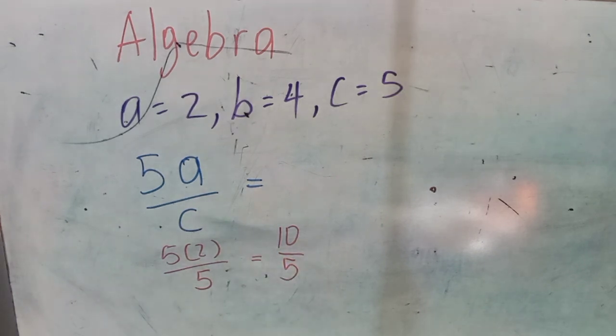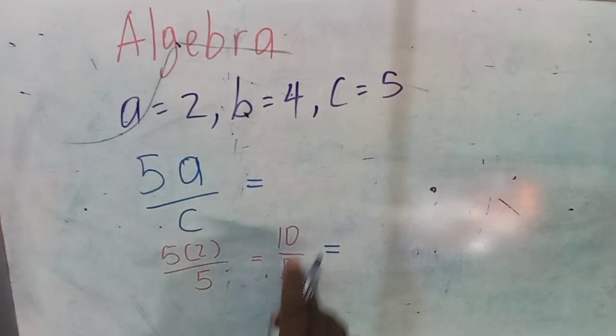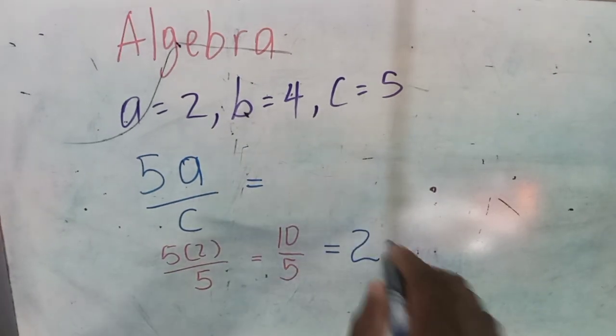We can't leave it like that because we never leave our answer as an improper fraction. An improper fraction is going to equal 1 or more than 1. In this particular case, we are going to find how many times the denominator can go in the numerator. 5 into 10 goes 2 times.